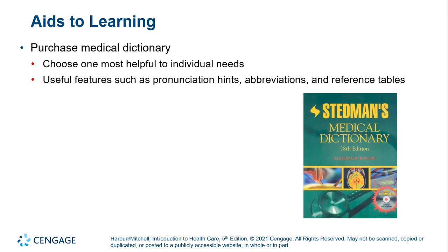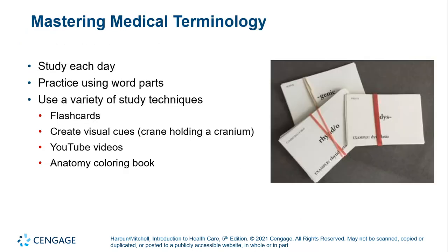Some things you can use to become more competent at medical terminology include a medical dictionary — actual hard-copy medical dictionaries are very nice, almost like mini encyclopedias, but there are electronic versions as well. It's really important to study every day. You need to practice: create flashcards, visual cues, watch YouTube videos, even use a coloring book. This is largely memorization, at least as far as the meaning of word roots, suffixes, and prefixes.